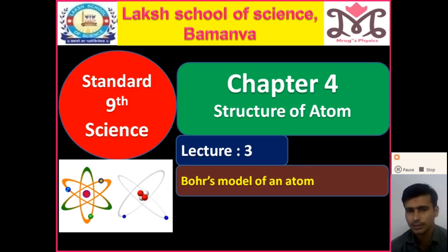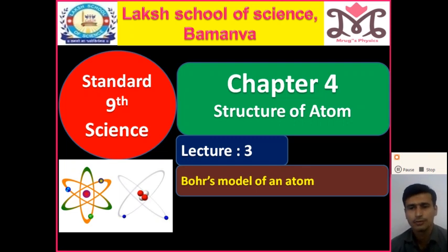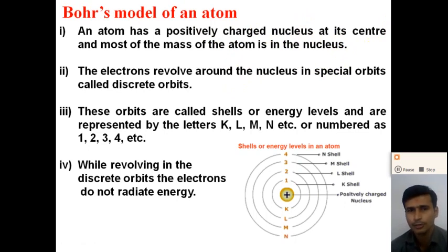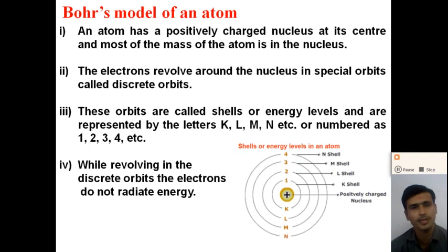Neil Bohr suggests the model of an atom called Bohr's model of an atom. Today in this video, we will discuss Bohr's model of an atom and how the electron is distributed in different orbits around the nucleus. According to Bohr, an atom has a positively charged nucleus at its center, and most of the mass of an atom is in the nucleus. All the positive charge and the maximum mass of an atom is concentrated at the central region, which is called the nucleus.